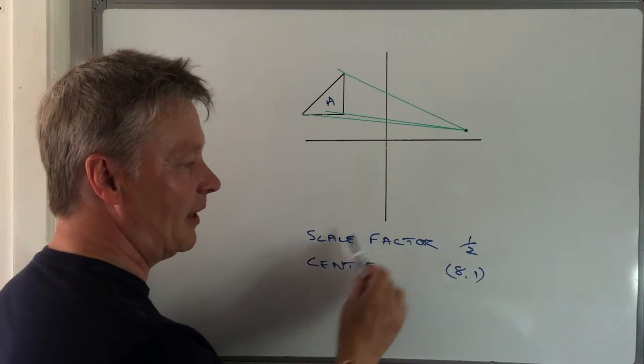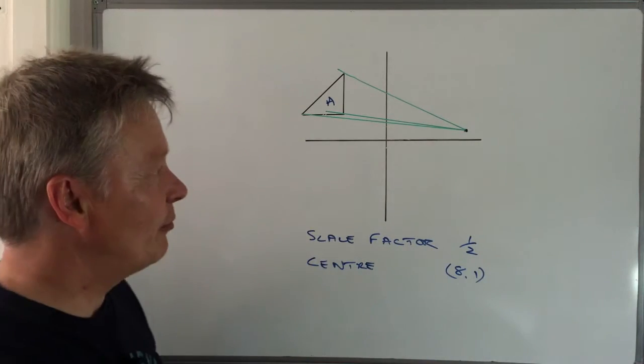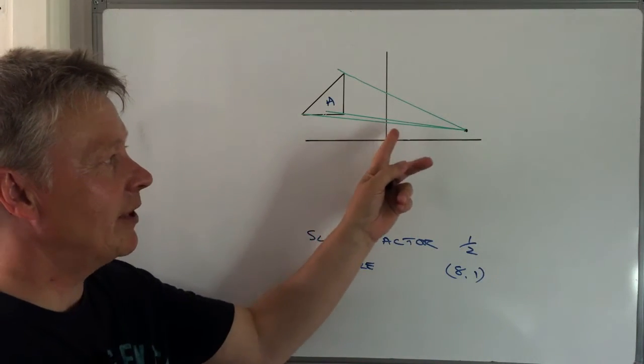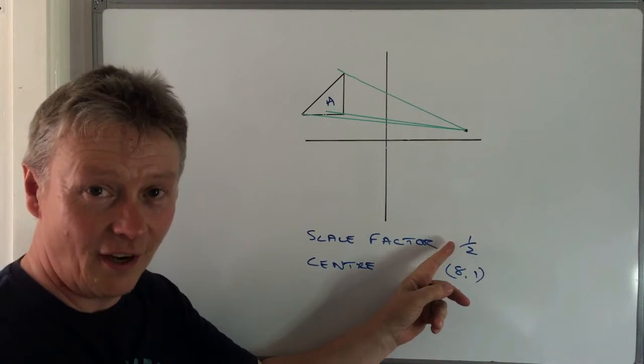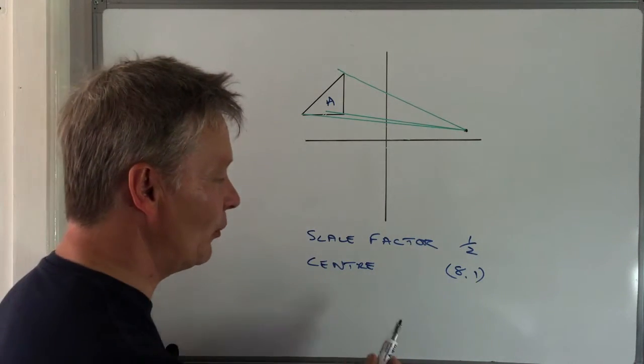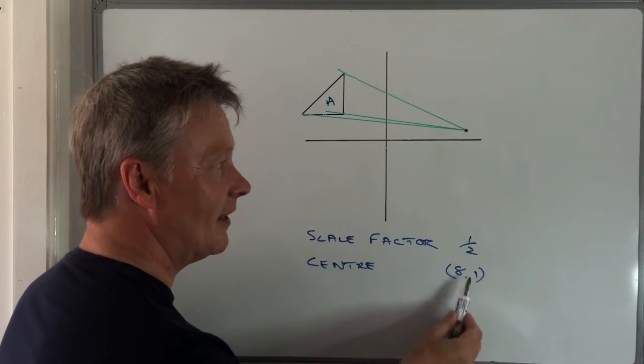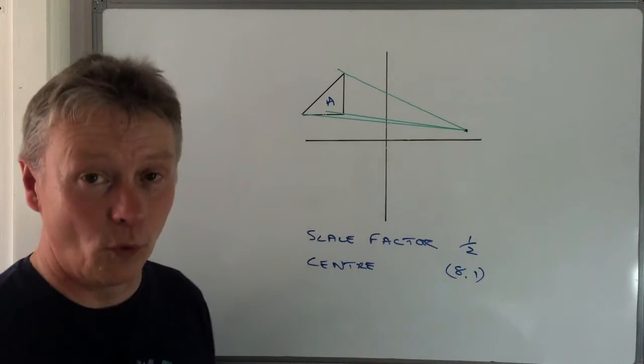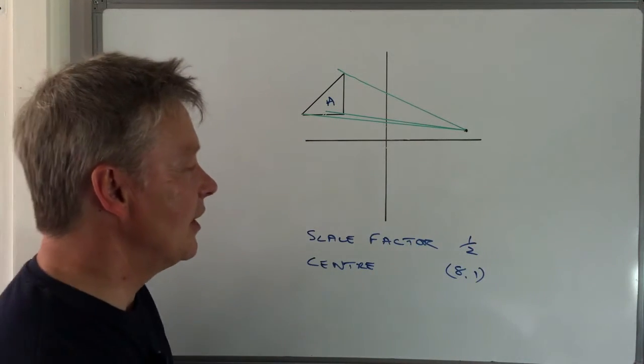Okay, so if they want to enlarge by a scale factor of a half, basically we're going to make a shape in here which is half the size of that shape. But it has to be at a point where the centre of enlargement is at 8, 1.